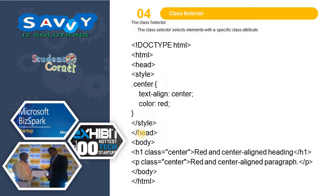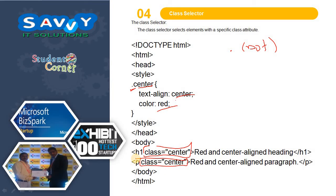The next one is the class selector. The class selector selects elements with a specific class attribute. Class attributes are represented with a dot. We use dot followed by the class name and apply center alignment. Wherever you use class equal to that class name, it reflects. Unlike IDs, class selectors can be used for multiple tags.